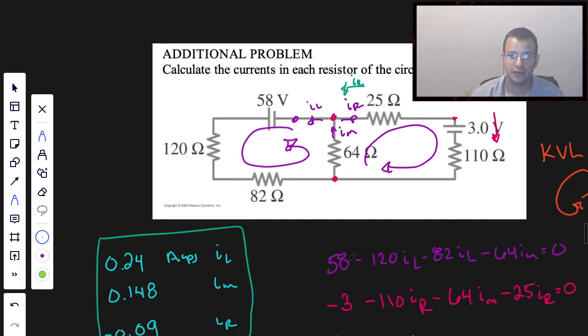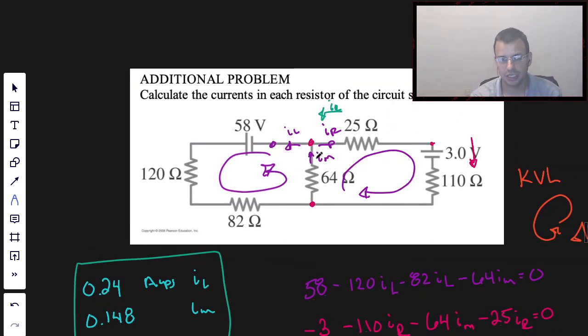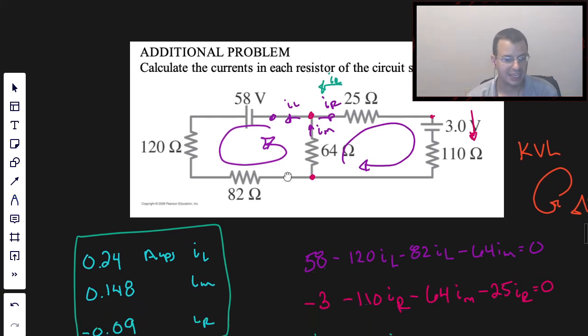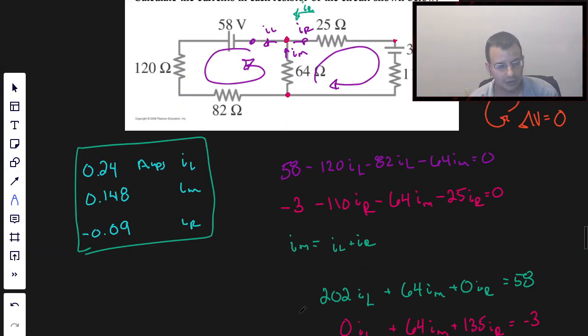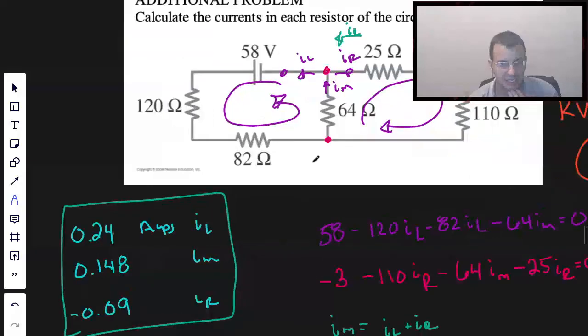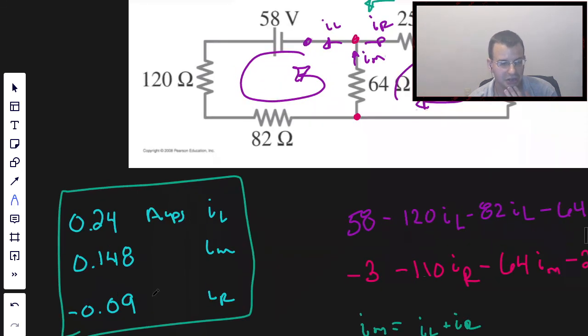So calculate the currents in each resistor of the circuit, which basically means calculate the three currents left, right, and middle branch. So the left branch is going to be 0.24 amps, the middle branch is 0.148, and then I right is going to be negative 0.09. And if you look at it, we said that I middle is I left and I right added together, and so 0.24 minus 0.09 is about 0.148. My rounding was a little off, but that was the idea.